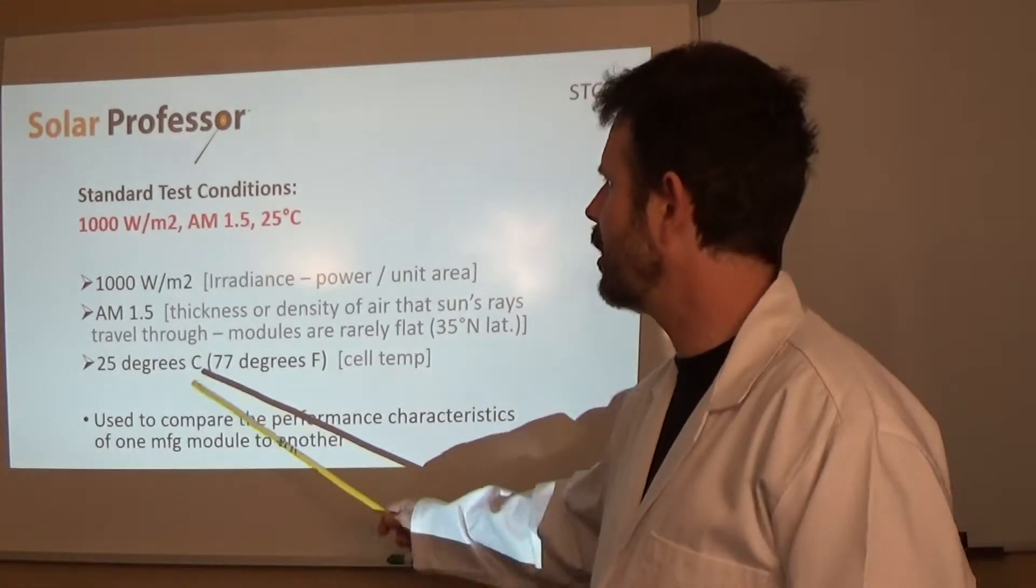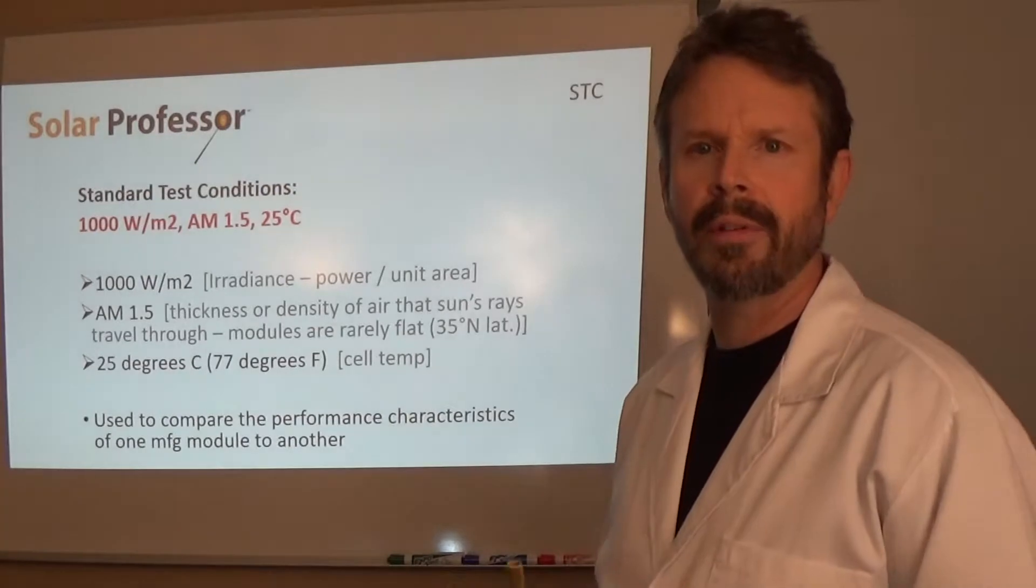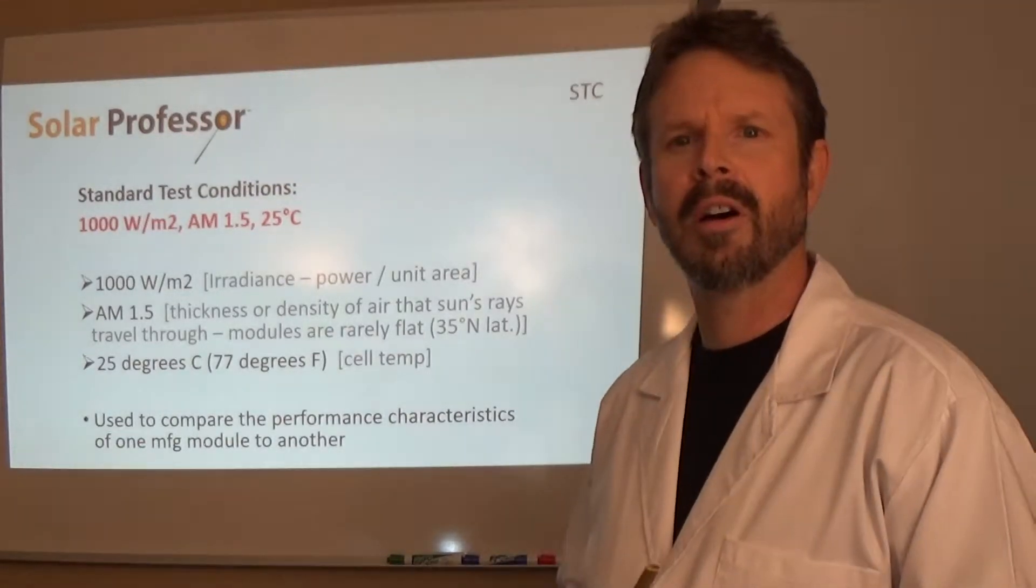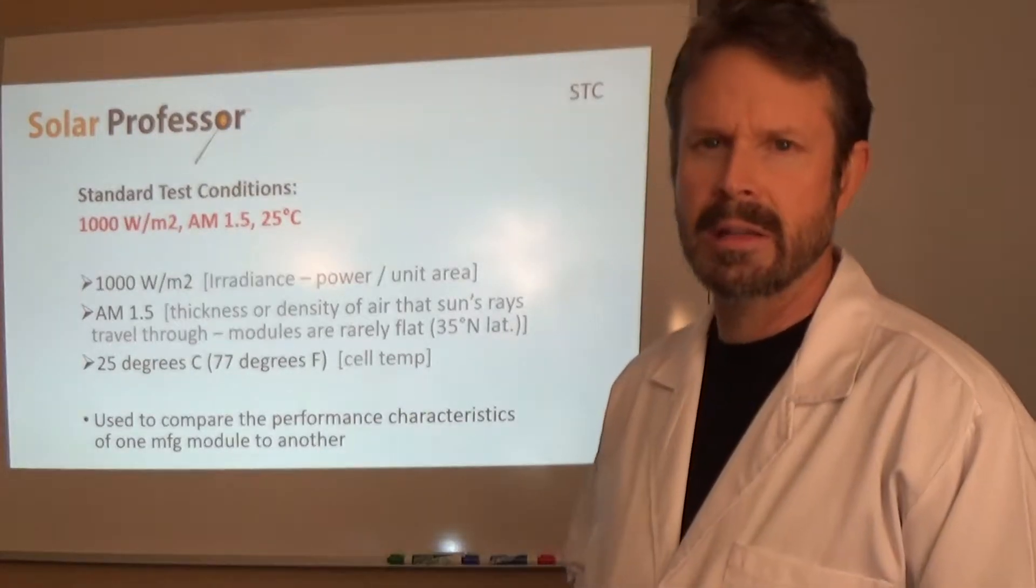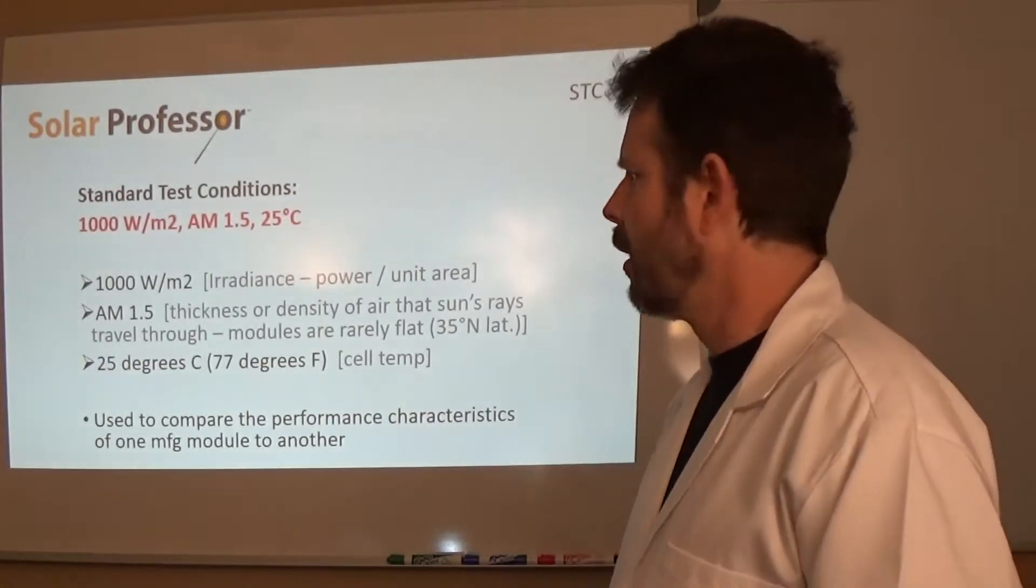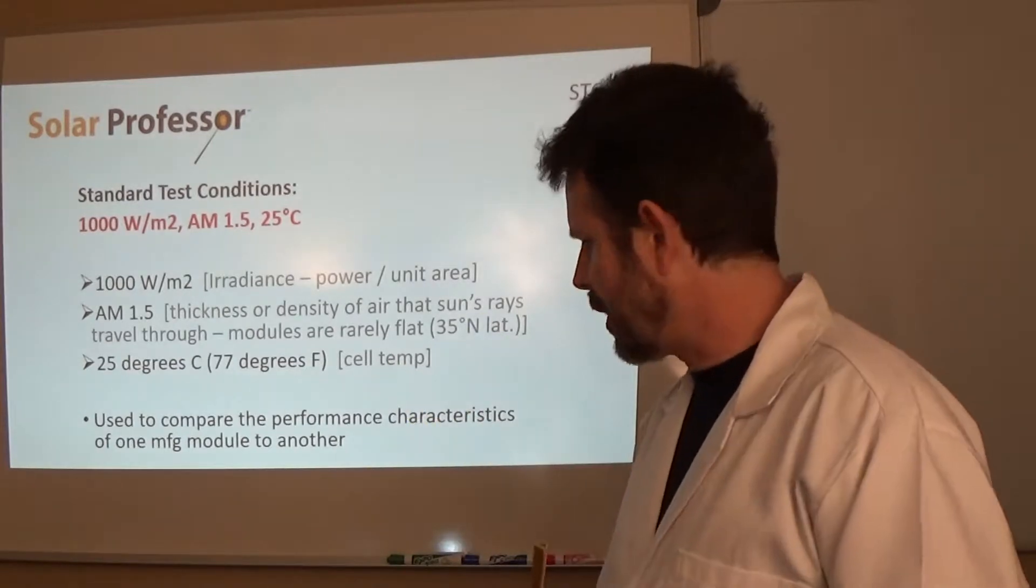And then, of course, the last thing here is 25 degrees centigrade, which is also 77 degrees Fahrenheit. And that gives you kind of an idea of what you're feeling out there. Most of the temperatures are measured in the United States at Fahrenheit. And we know what 77 feels like. It's kind of a mild day, really. That is the actual cell temperature.